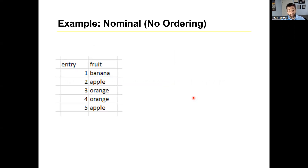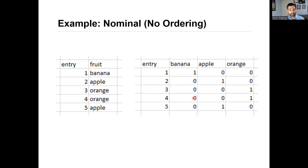Let's give an example of some nominal data. Here we have an example data frame. Entry is just the primary key or the row number, and we have fruit — one of three types. We can take that fruit and go from a single column to multiple columns, where we now have a numeric value and each column is associated with one type of that data. So for banana, for the first entry, the banana column gets one and the rest get zero. Same thing with apple — only the apple column gets a one.